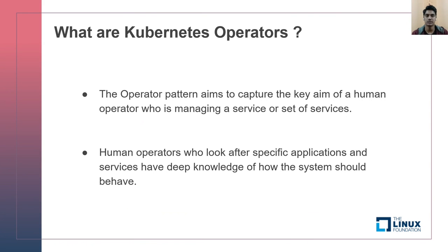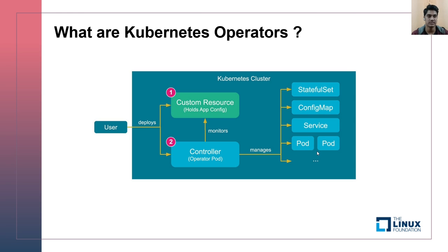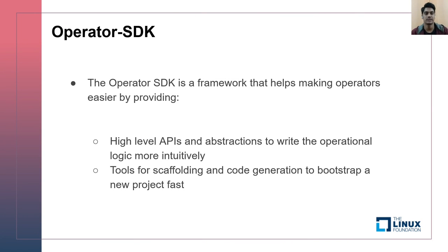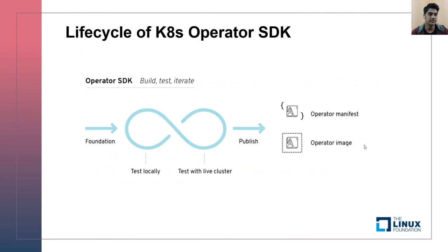The operator pattern aims to capture the key work of a human operator who has deep knowledge of how the system should behave at certain events. Kubernetes operators can be coded to get the desired result from deployments. A custom resource contains all application configuration, and the controller contains all the business logic. As soon as a custom resource is deployed, the controller deploys all required Kubernetes objects like stateful sets, config maps, and services. I used the Operator SDK framework, which helps with code generation and scaffolding. You can test the operator locally, then deploy it as a separate deployment in the cluster.